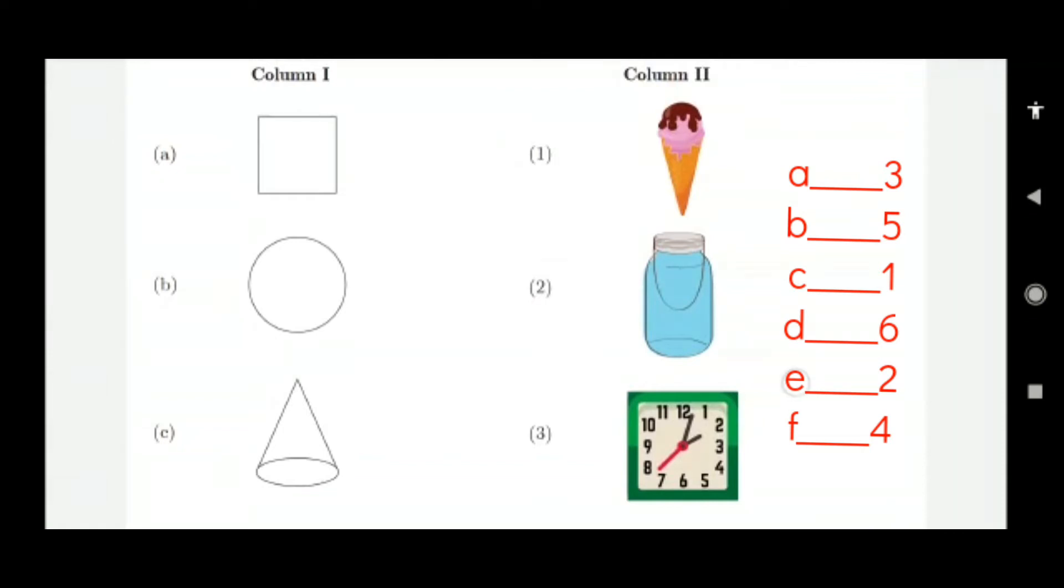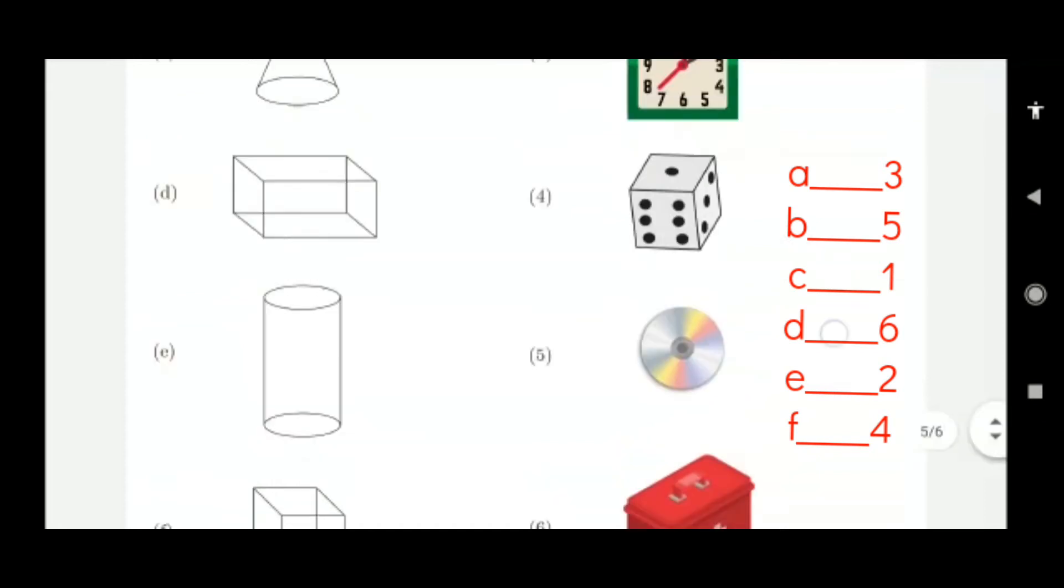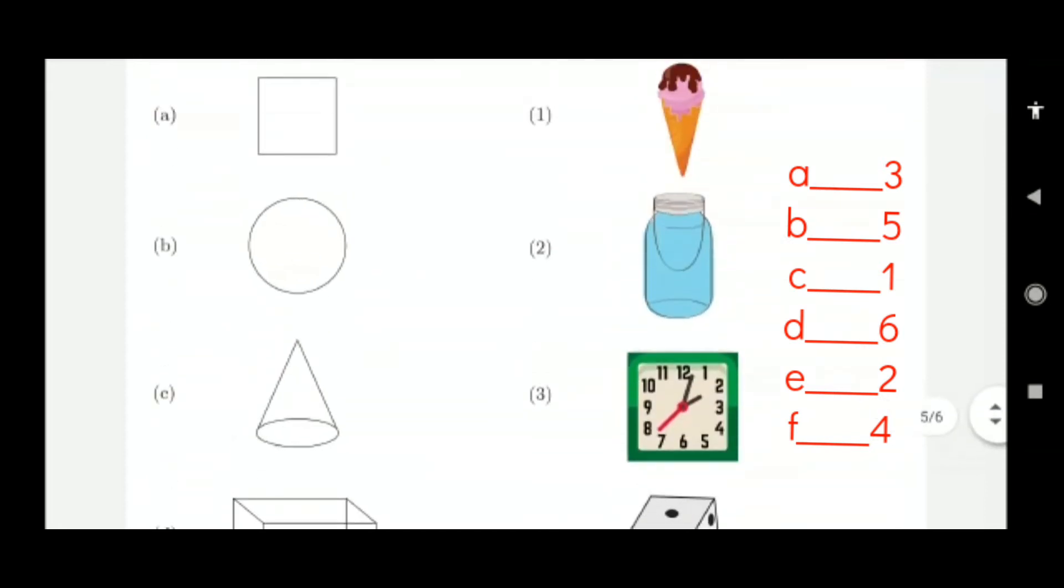And this is round shape. Which is round shape? This is, what is this? CD. CD is round shape. This is conical. C and 1. Ice cream is conical, cone shape.